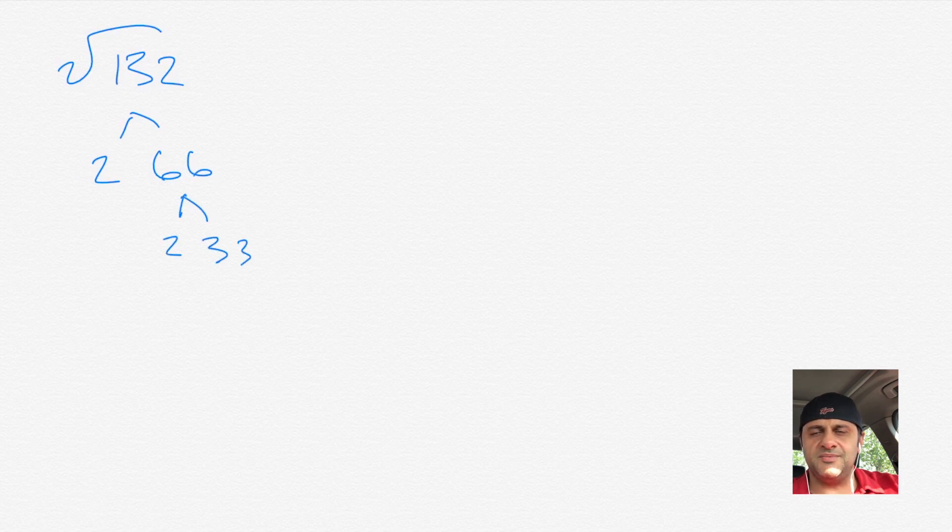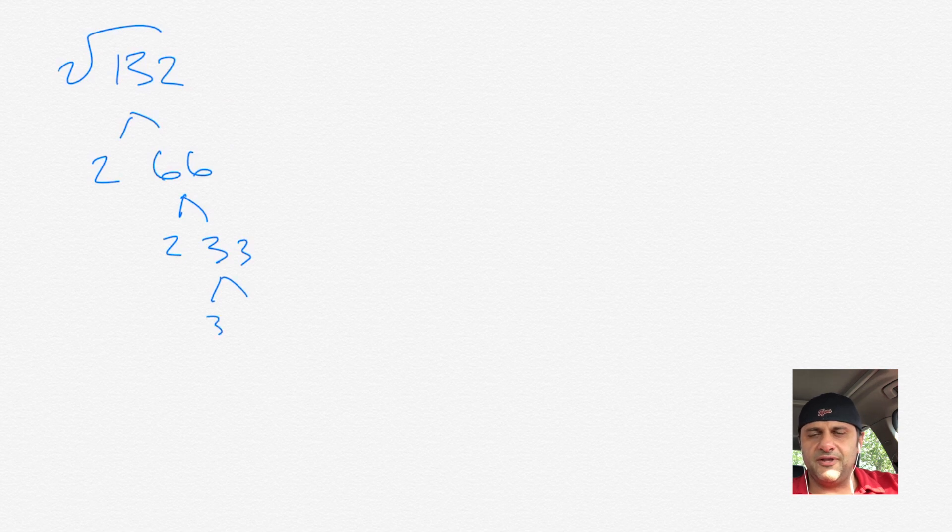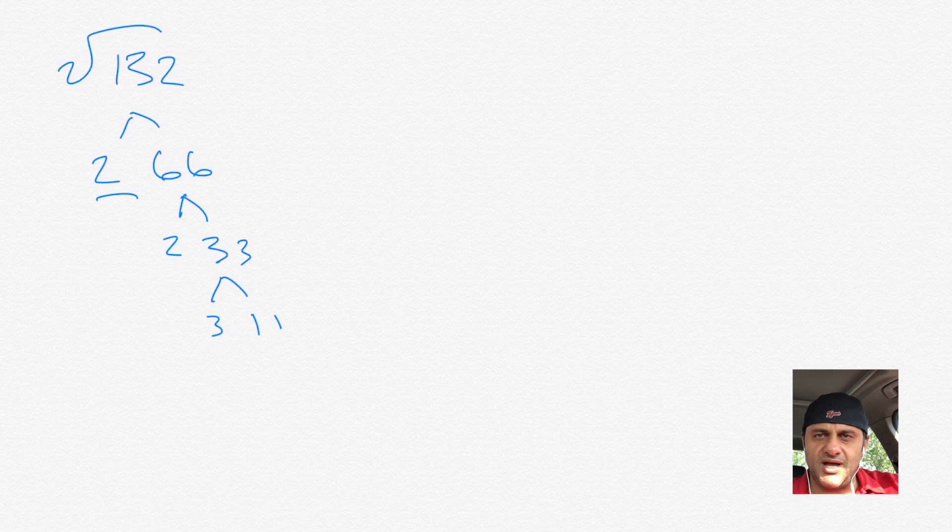2 goes into 66, 33 times, and then we could break down 33 by 3 and 11. And then when we have it all broken down, we try to see what pairs up. There's a pair of 2s, and that's the only pair. Whenever there's a pair,